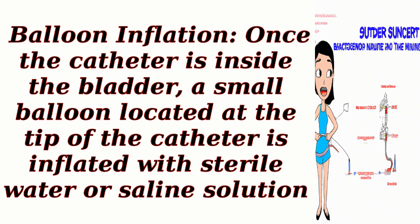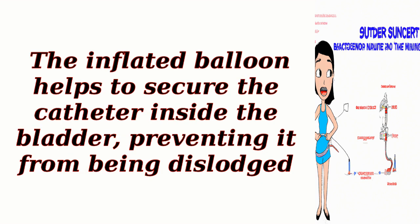Step 6: Balloon inflation. Once the catheter is inside the bladder, a small balloon located at the tip of the catheter is inflated with sterile water or saline solution. The inflated balloon helps to secure the catheter inside the bladder, preventing it from being dislodged.